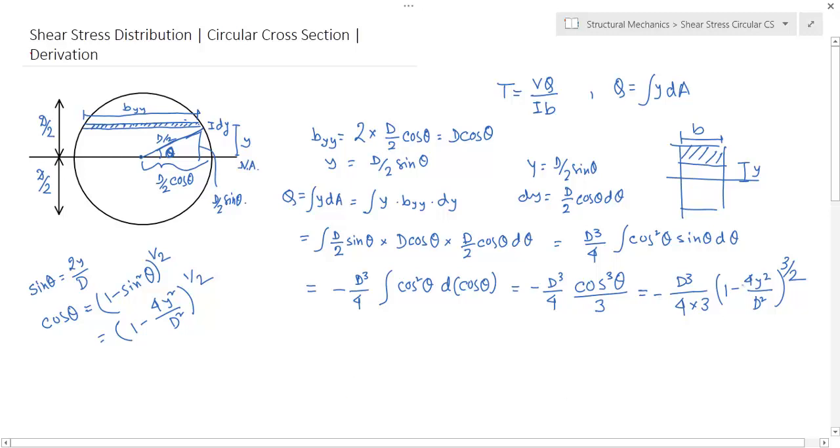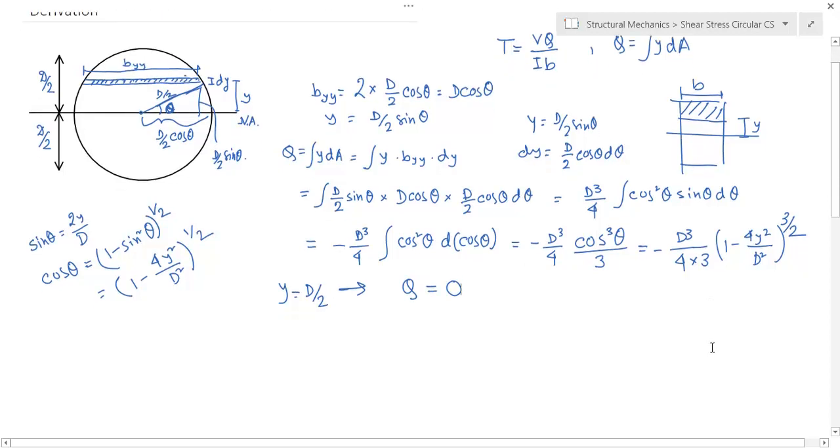So this is the value of Q. You see, when the value of y equals D/2, then the Q value becomes zero, and at y equals zero, the Q value becomes maximum.